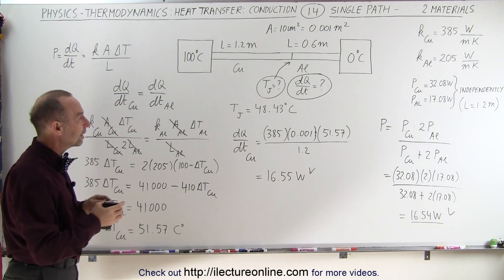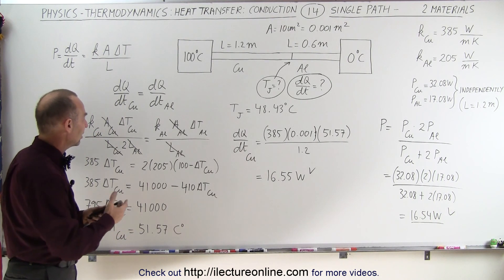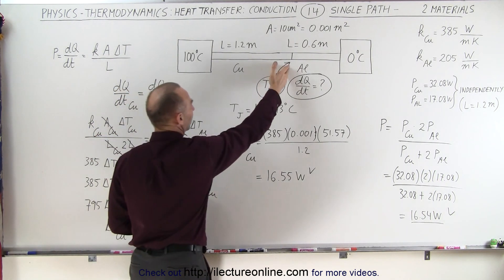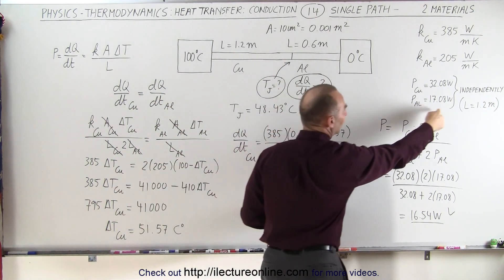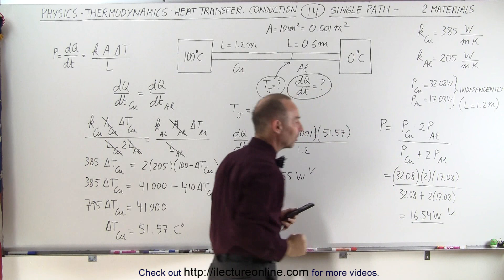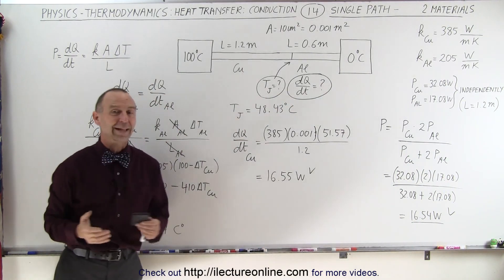And so both methods work, and you can see that you could do this in the traditional method, finding the junction temperature, and then the heat through the conducting path, or if you already have these results right here, you can do this very nice, slick way. And that's how it's done.